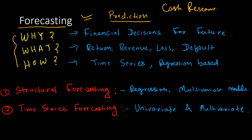Who is to be given a loan and who is not — that is also one sort of prediction for the future. These are important decisions bank managers take for the future, and that's why prediction or forecasting is very important. A number of financial decisions are taken for the future, and hence scientifically forecasting what is going to happen is essential. Of course, there is uncertainty associated with forecasting, but that will be the best prediction you can make.